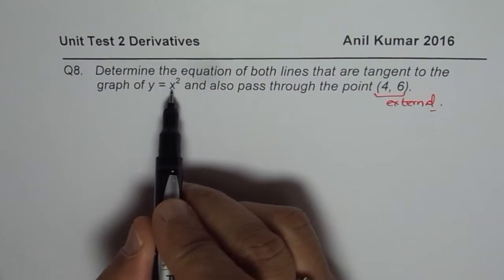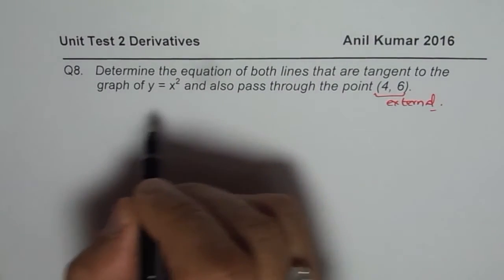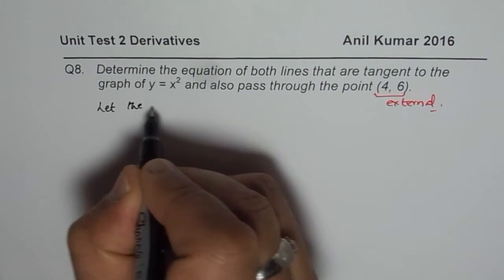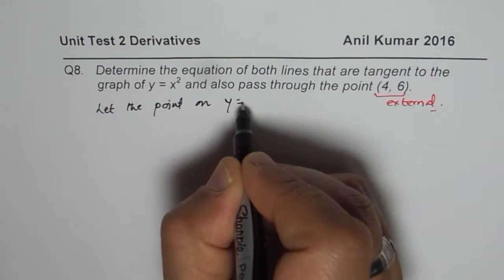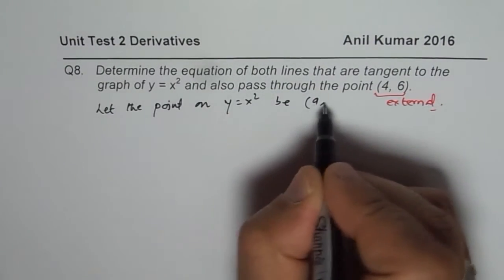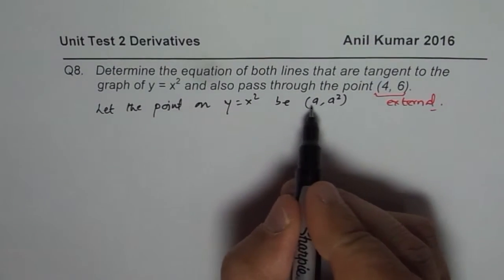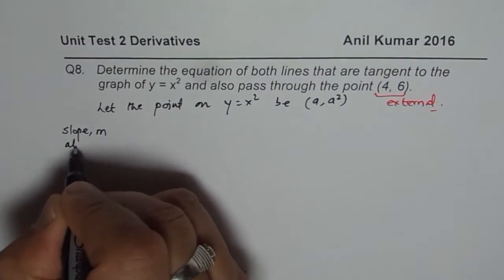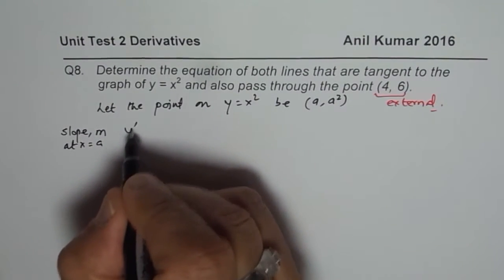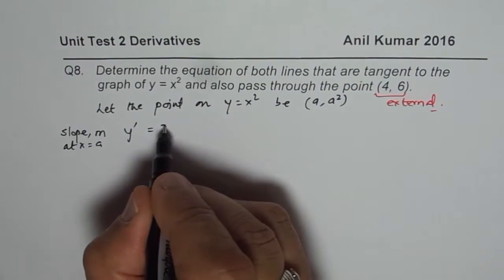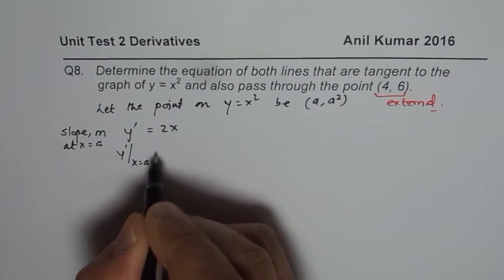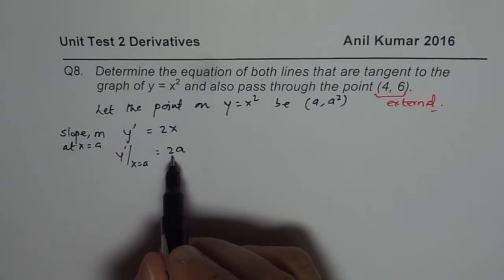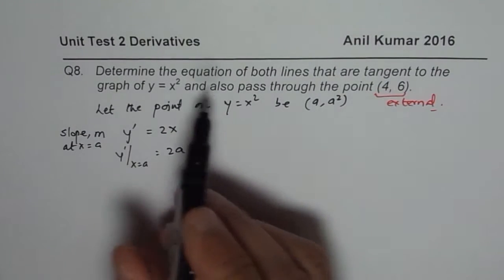But we don't know what point on the function we are talking about. So we will say: let the point on y equals x squared be A. If x equals A, then y equals A squared. At that point we will find the slope of the tangent line. The slope M at x equals A is given by y', which for x squared gives us 2x. So y' at x equals A is 2A. So 2A is the slope of the tangent line at point A on this function.